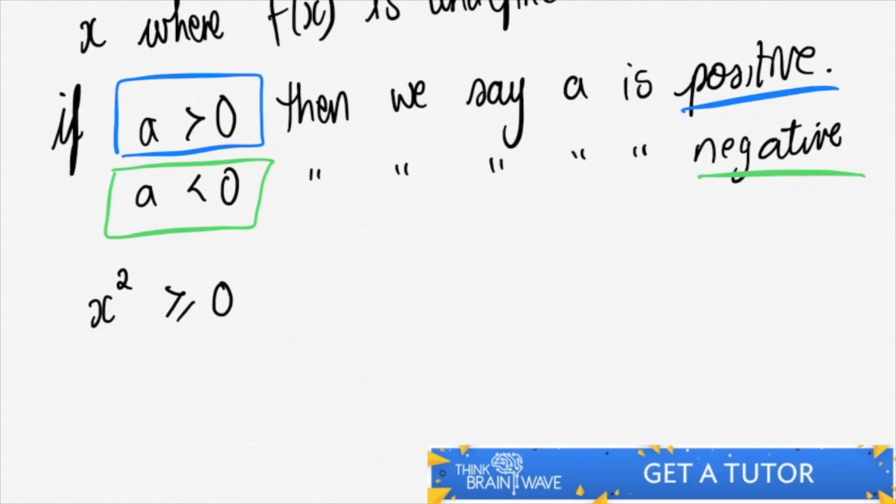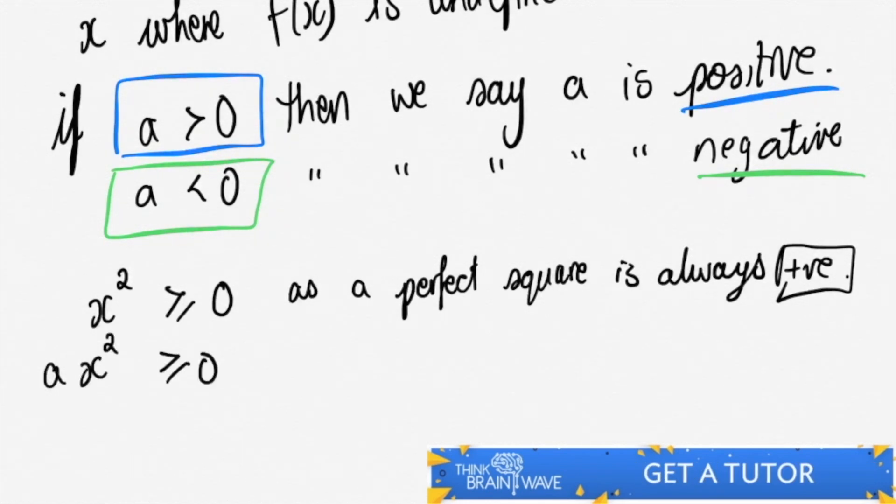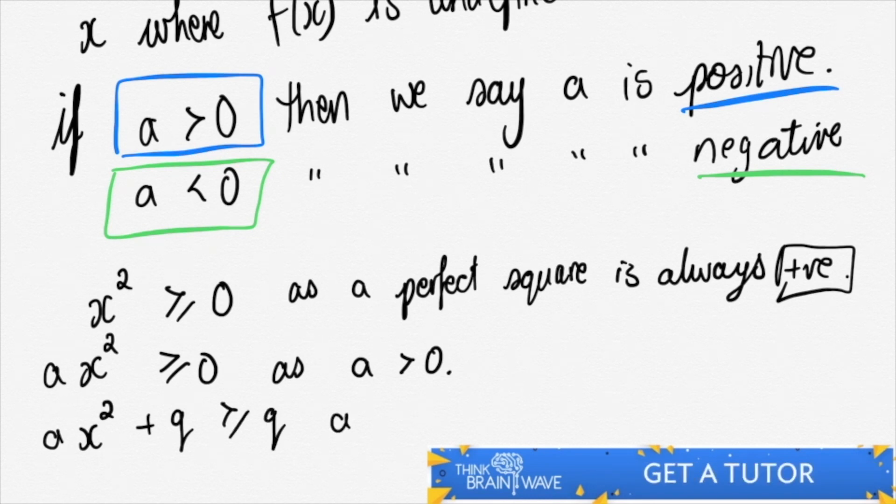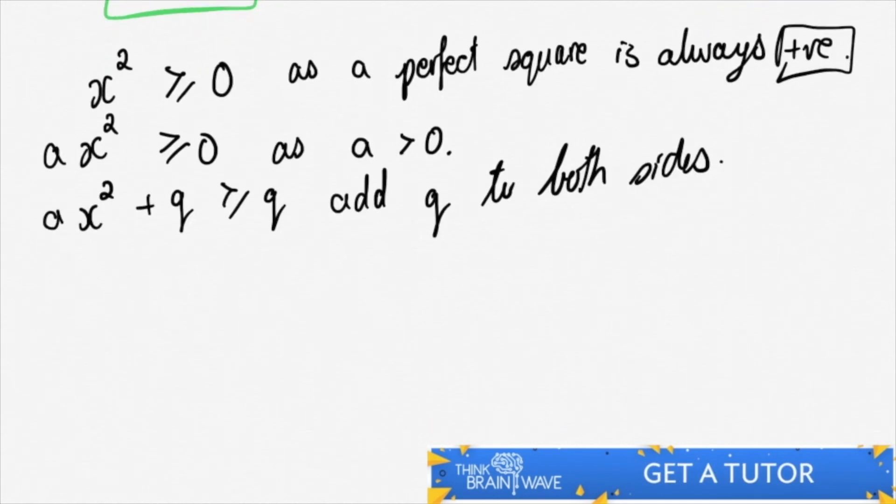When x² is greater than or equal to 0, as a perfect square, it's always going to be positive. If you have ax² greater than or equal to 0, then ax² + q is greater than or equal to q. We add q to both sides, as you can see.